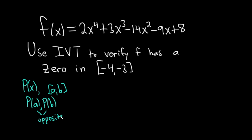...then there is a number, at least one number c in this interval such that p of c is equal to zero. So that's the one we're using.